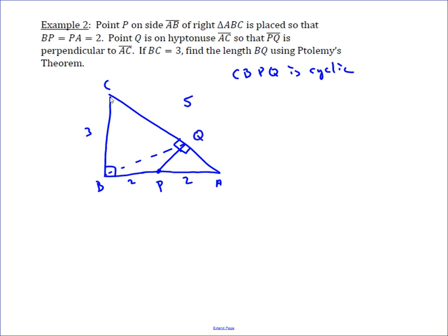That's good because we already know some of the side lengths. We can find PC very easily — just by using the Pythagorean theorem. PC turns out to be the square root of 13.